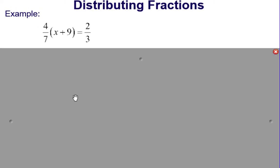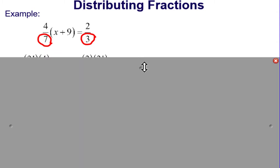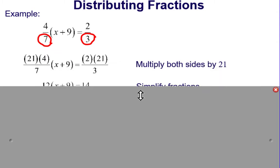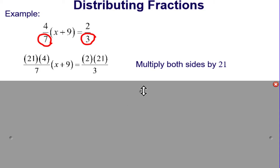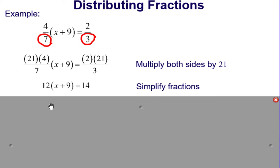Here's a different example of an equation with actually 2 fractions. We have 4 sevenths times the quantity x plus 9 equals 2 thirds. Instead of distributing the 4 sevenths, let's look at our denominators — we have a 7 and a 3 — so the least common denominator is going to be 21. We're going to multiply both sides of the equation by 21, then simplify and reduce, leaving us with 12 times the quantity x plus 9 equals 14.